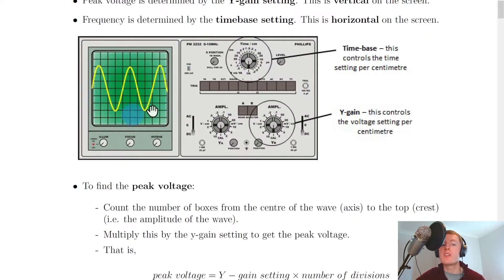If I look at my oscilloscope screen here, let's say the Y-gain setting was set to 5 millivolts per division, and the amplitude is 3 boxes up. That means 5 millivolts per division times 3 divisions, which gives 15 millivolts as the peak voltage.